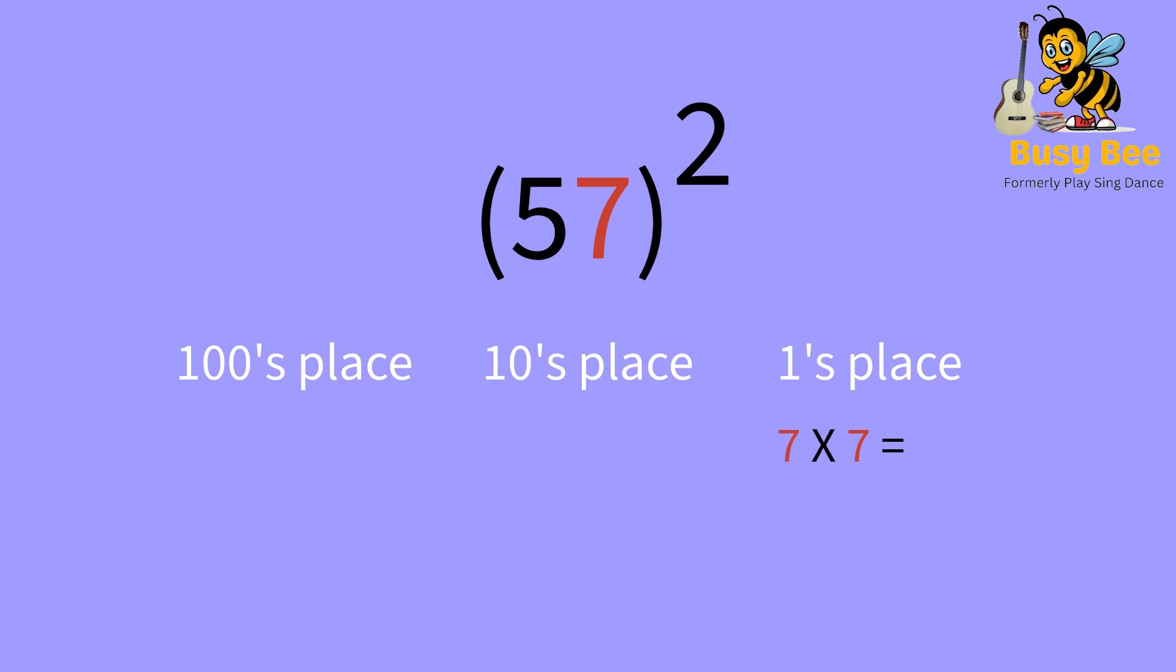The first step is to take the ones place number and multiply it by itself. Here, it is 7 times 7. 7 times 7 is 49.